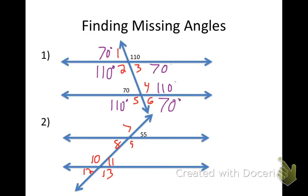Let's try number two. I need to first find angle seven. How would I find angle seven? You do 180 minus 55 because it's a linear pair. So what's my answer? 125. Nice job.